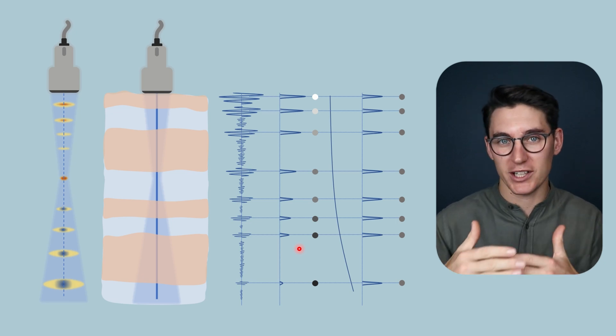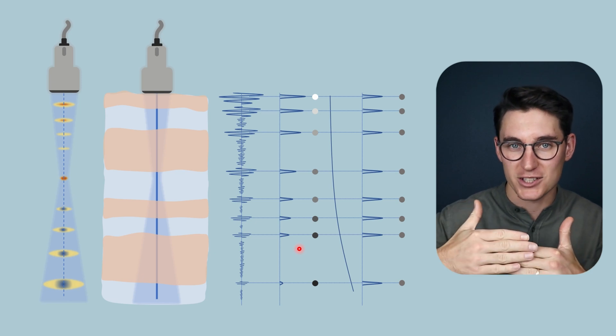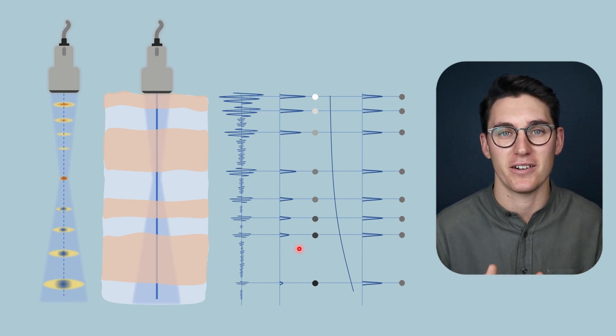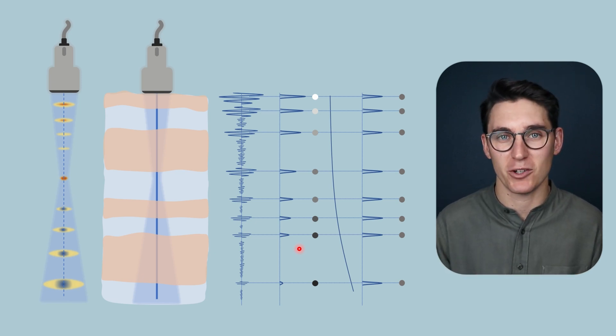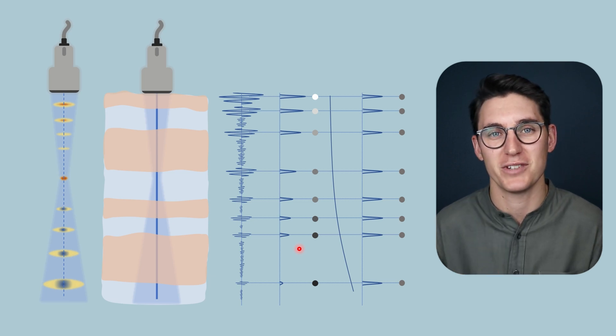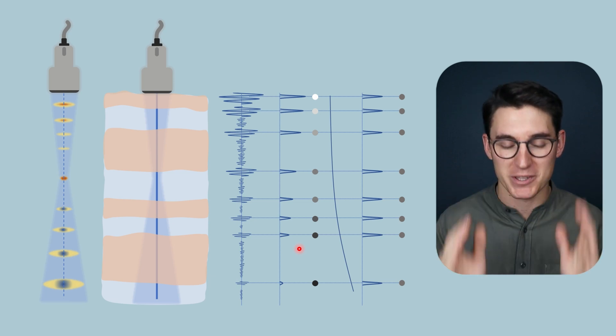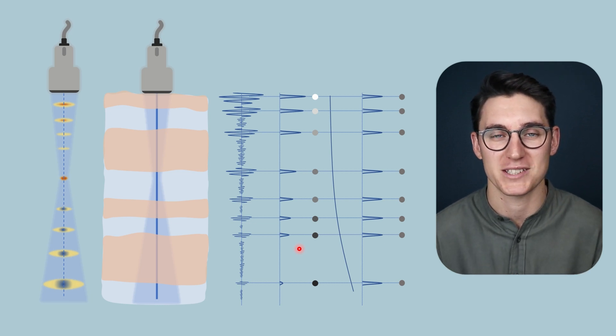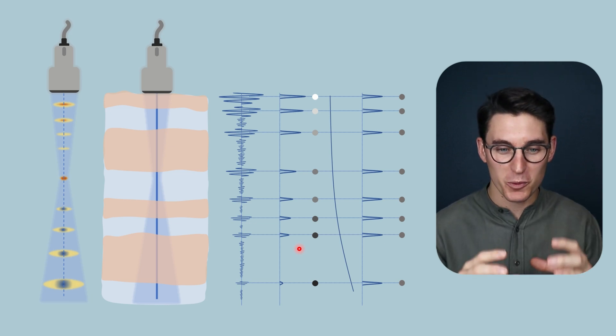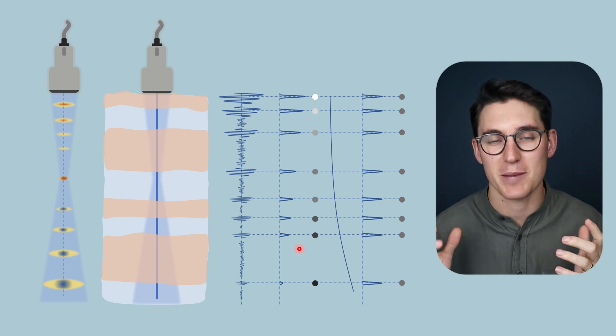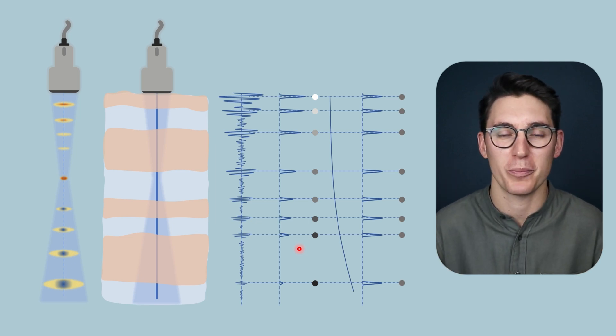But time gain compensation is a really good way to get equal brightness distribution throughout the depth of our image. And this is something that comes up in almost every single ultrasound physics exam. That's why I've dedicated an entire video specifically looking at time gain compensation. So I hope this helped. I hope these diagrams have helped you to conceptualize what time gain compensation is.